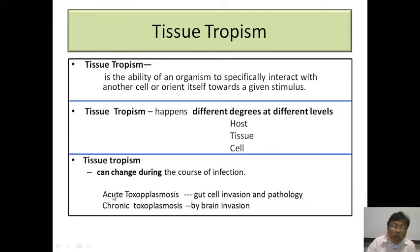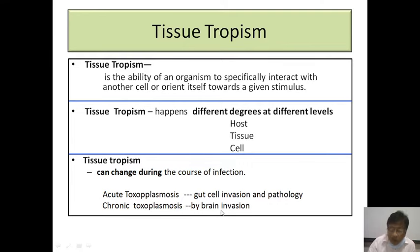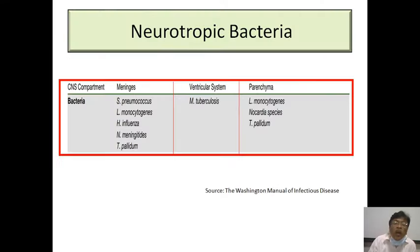For example, in acute toxoplasmosis, it initially infects the gut and causes hepatopathy and intestinal disease. But when it goes to the chronic stage, it produces brain invasion. Looking at this tissue tropism, we can classify the neurotropic microorganisms accordingly.